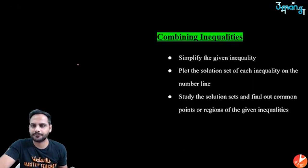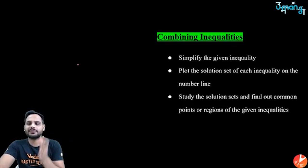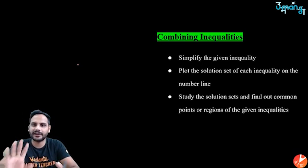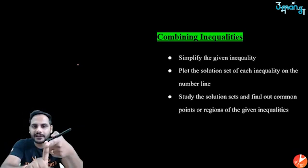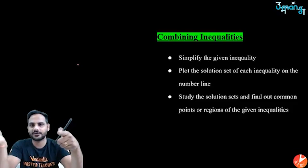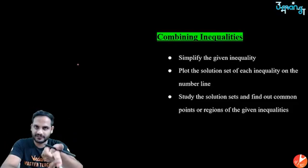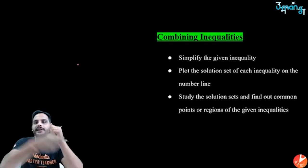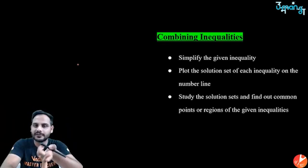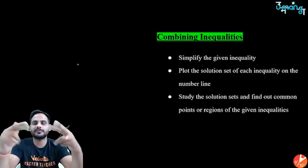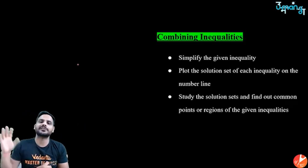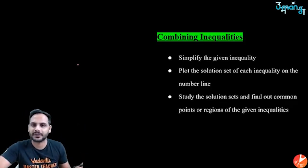Summary: solve linear inequations just like linear equations. Remember the 3 cases for sign reversal — when shifting a negative in multiplication/division, when cancelling negatives on both sides, and when taking reciprocals. Otherwise, everything else is the same. Once you fix these in your mind, no problems will arise.